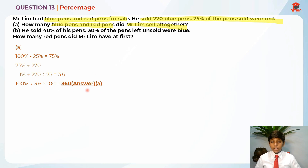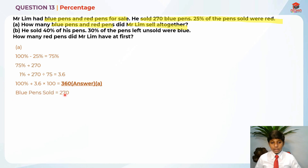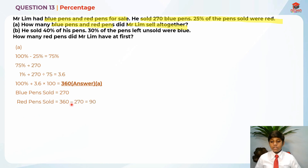360 is the answer for Part A. After this, I can separate the blue pens — the blue pens sold is 270. And then we can find the red pens sold. So red pens sold is 360 minus 270, which is 90. So this is just for reference later — it might be useful.